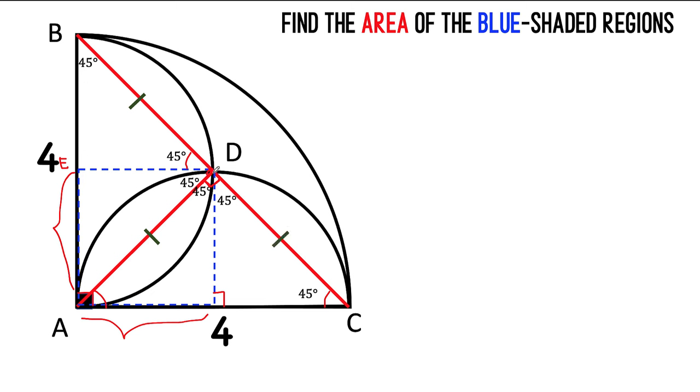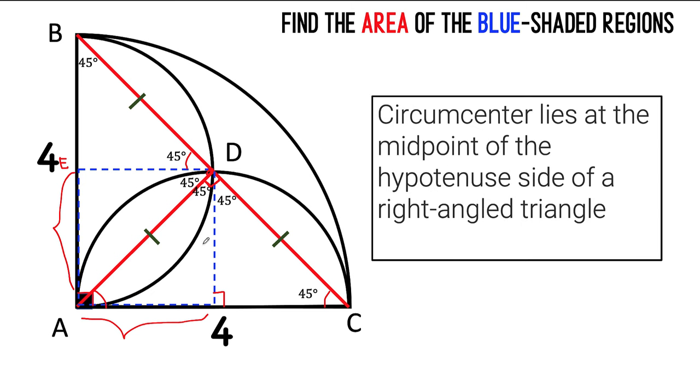And because of that, we now say that point D is equidistant to vertex B, vertex A, and vertex C of right triangle BAC. That means point D is the circumcenter of triangle ABC, because the circumcenter lies at the midpoint of the hypotenuse side of a right-angled triangle.